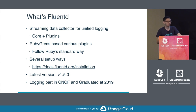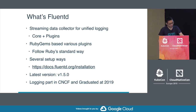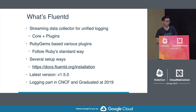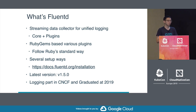Fluentd uses RubyGems for Ruby plugin distribution. RubyGems is a standard library platform for Ruby, so we can use the whole Ruby ecosystem for developing Fluentd plugins. For deployments, the Fluentd project provides packages via OS package managers like YUM and apt — deb packages for Ubuntu and Debian, and RPM packages for Red Hat and CentOS. The project also provides MSI packages so you can easily install Fluentd and Ruby on Windows Server, running Fluentd on both Linux and Windows servers.